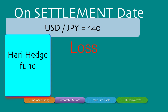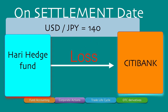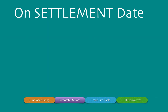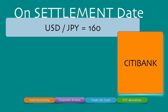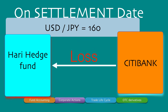This loss is paid by Hari Hedge Fund to Citibank. There is no exchange of the underlying assets — just the loss amount in USD is paid by Hari Hedge Fund to Citibank. On the other hand, if on the settlement date the USD/JPY rate is 160, Citibank sold USD/JPY at 150 but the price is now 160 — so for Citibank it's a loss. Citibank then has to pay that loss to Hari Hedge Fund, again with no exchange of the underlying asset.